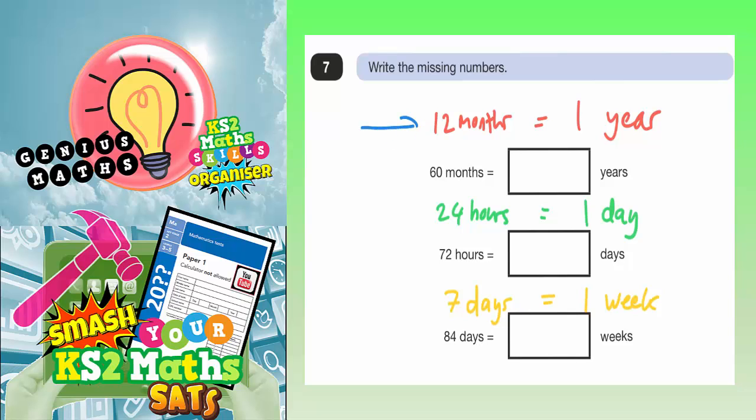I've already written in some extra facts to help you with this one, and it's all about what one of each thing is worth. So one year is worth 12 months, one day is worth 24 hours, and one week is worth 7 days. Those are facts that you should already know. So let's see how it helps us.